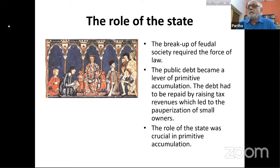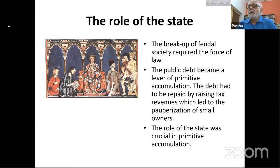Indirect taxes are disproportionately a burden on poorer people, who spend a larger part of their income buying basic necessities from the market. If most commodities they purchase have a tax, then poorer people are hurt disproportionately compared to their incomes. Over time this leads to the pauperization of small owners as costs of subsistence keep rising. The role of the state was crucial in capitalist accumulation.